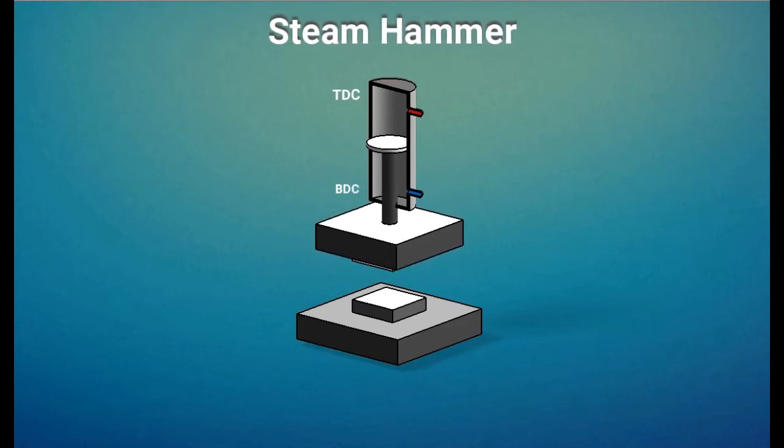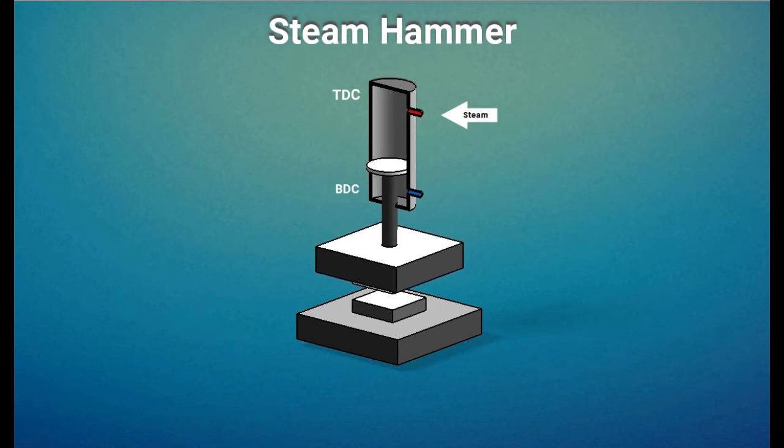Initially piston will be at top dead center. Steam enters the cylinder through the upper port causing the piston to move downward, causing the upper die to hit the raw material.